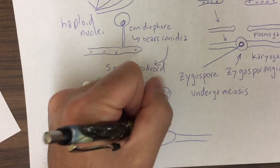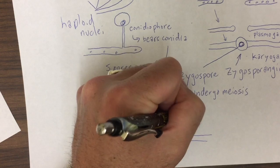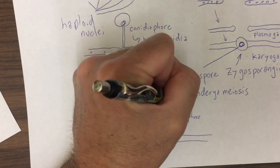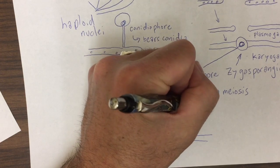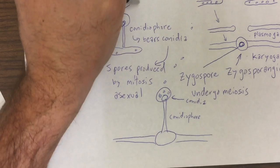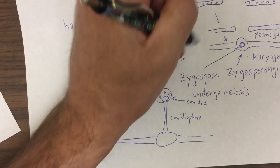that's going to produce conidia, and those conidia are going to grow into new hyphae.